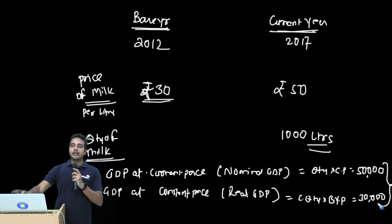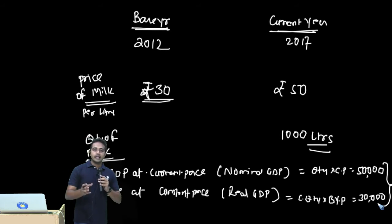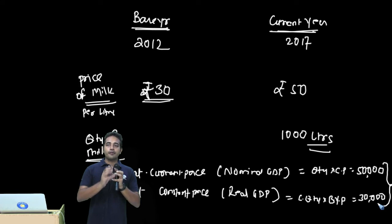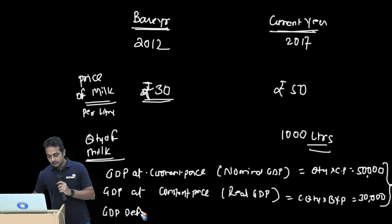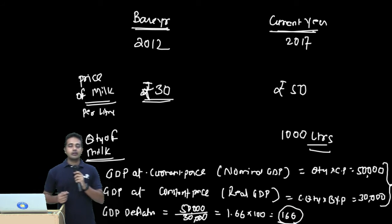This inflation number is different from other inflation indices we'll learn later — like CPI (consumer price index), wholesale price index, and producers price index, as well as headline and core inflation. The GDP deflator takes care of all goods and services in a country. GDP deflator = GDP at current prices ÷ GDP at constant prices. In our example: 50,000 ÷ 30,000 = 1.66, scaled by 100 to give a GDP deflator of 166.